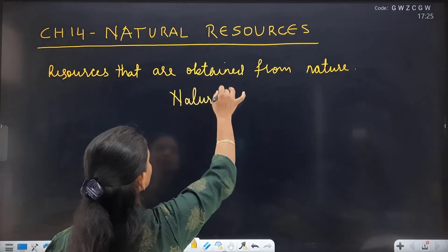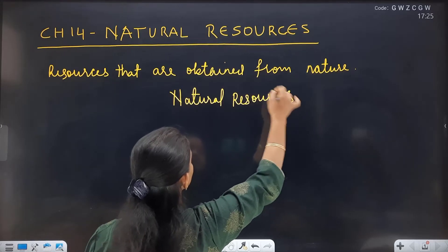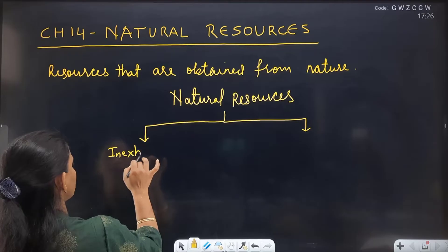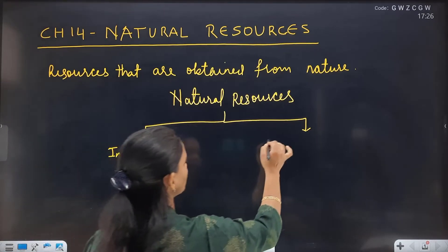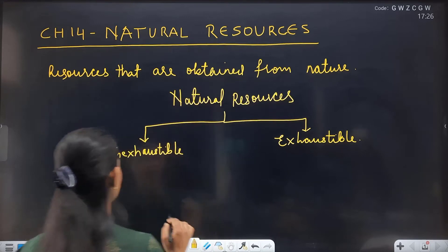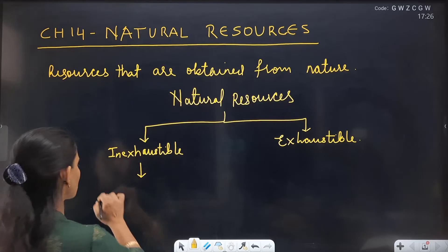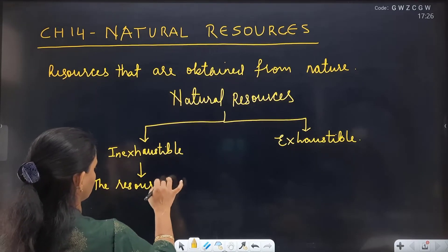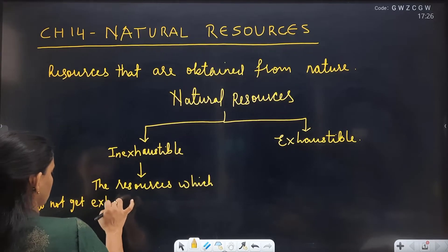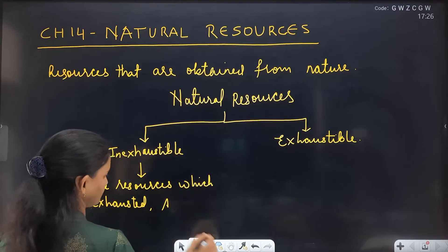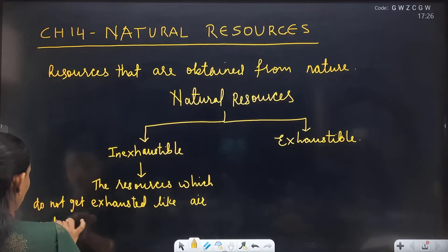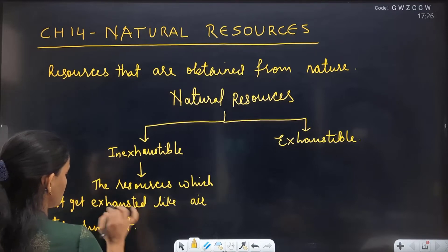We have to divide natural resources. Natural Resources can be divided into Inexhaustible or Exhaustible. Inexhaustible resources are those which do not get exhausted — like Air, Water, and Sunlight.